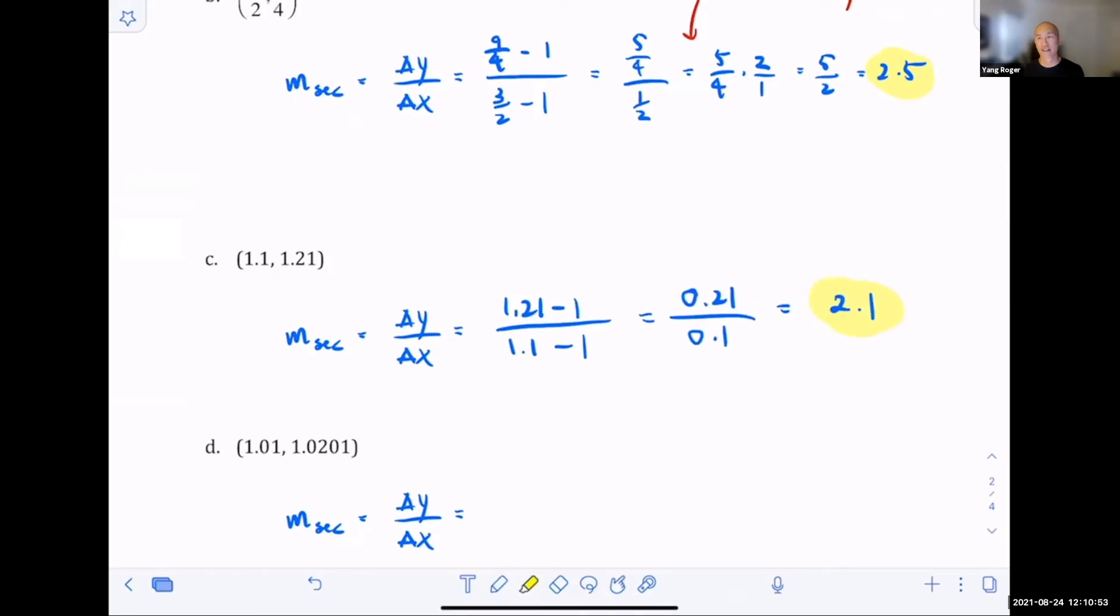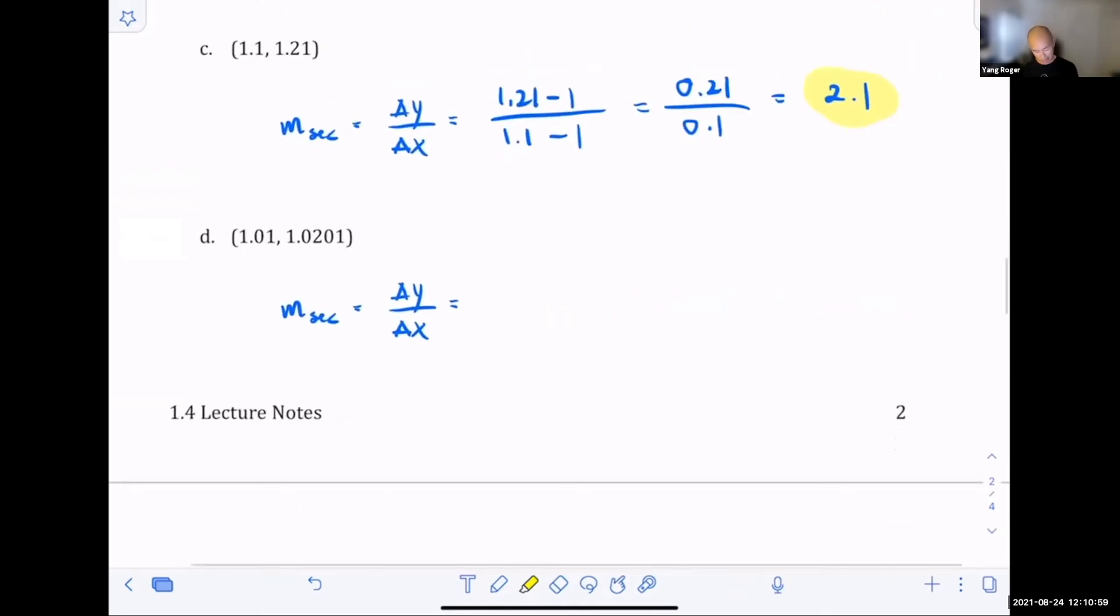For this last one, we're going to have 1.0201 minus one divided by 1.01 minus one. When you subtract those two guys, you're going to get 0.0201 divided by 0.01. And when you simplify that, that just moves the decimal place to the right by 2. So that's going to be 2.01. Any questions so far?